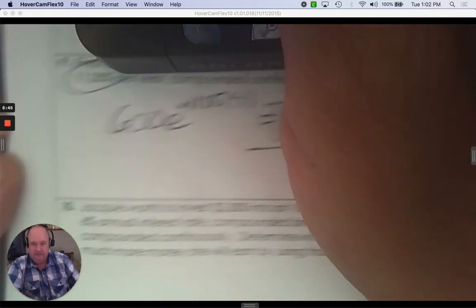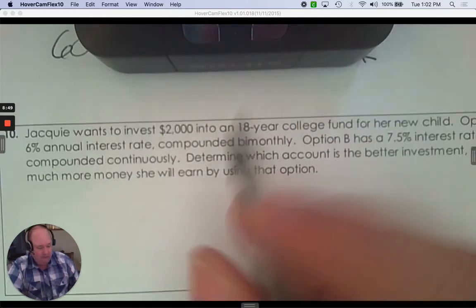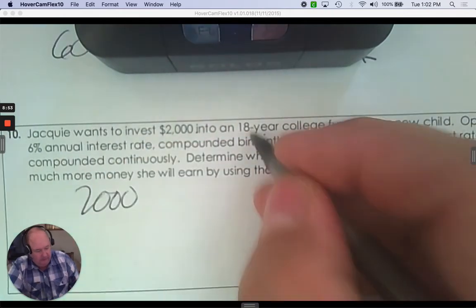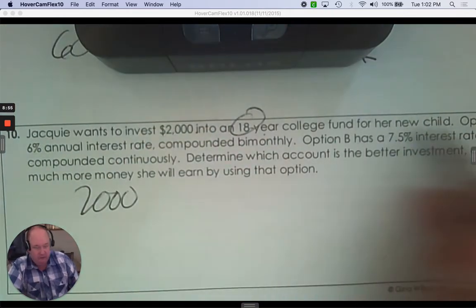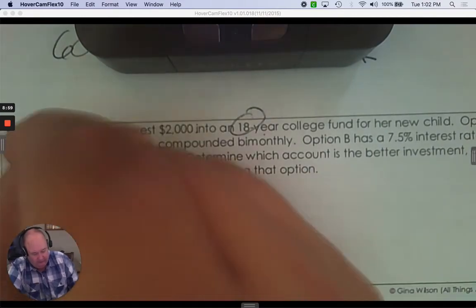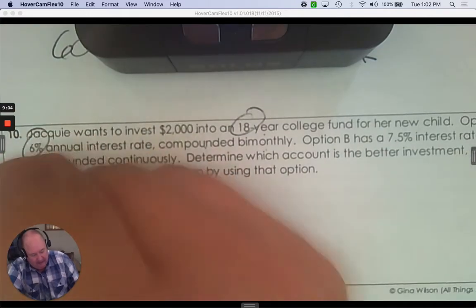Jackie wants to invest $2,000 into an 18-year college fund for her new child. Option A has 6% compounded bi-monthly. So this is going to be option A.